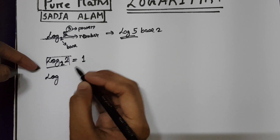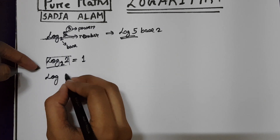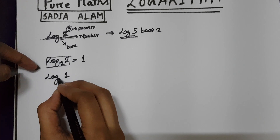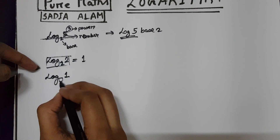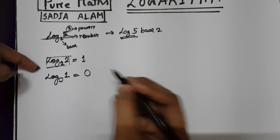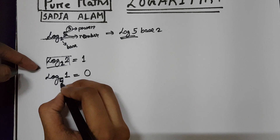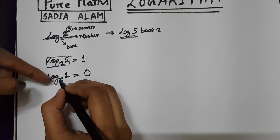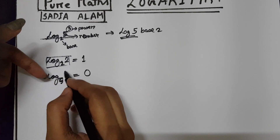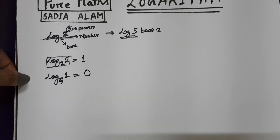If you have the number as 1, then whatever your base is, the whole term will become 0. So if I write log 1 base 5, or log 1 base 100, it doesn't matter. As long as the number is 1, the total term will become 0.